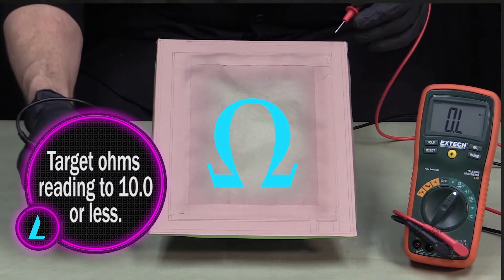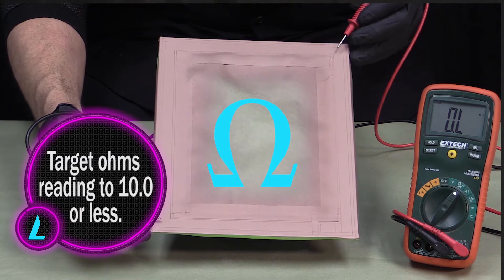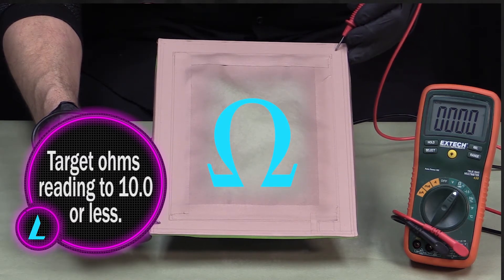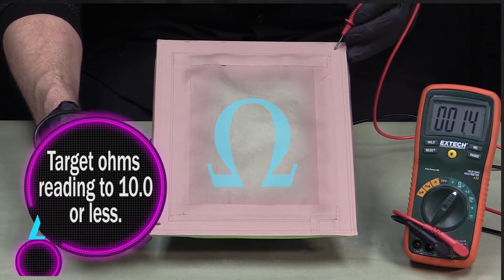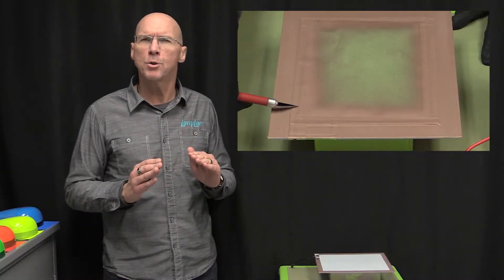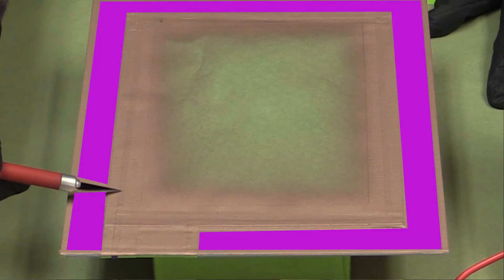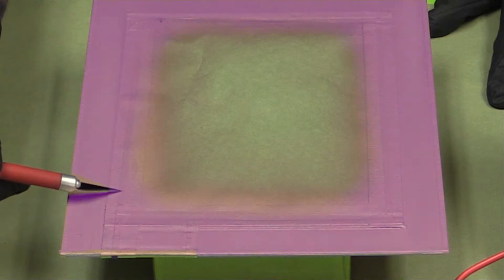When applying your bus bar, you determine the proper coverage by measuring the resistance with a multimeter to ensure there is enough material to supply the power needed. The issue you will run into is when using your multimeter to measure the resistance of the bus bar, it will read all of the backplane overspray material on the masking over your LumaColor,